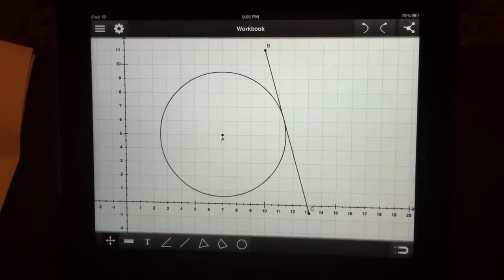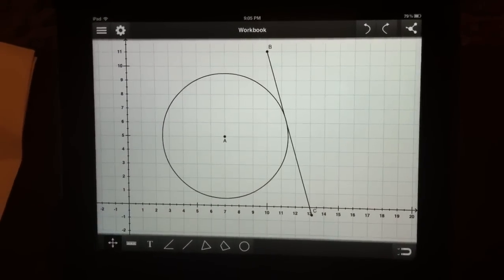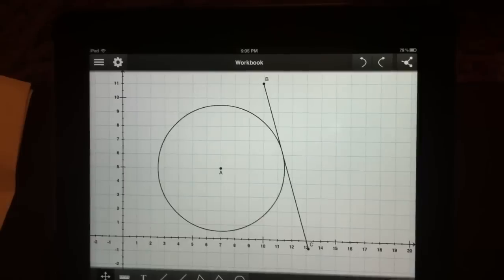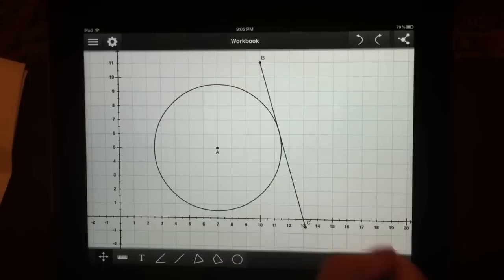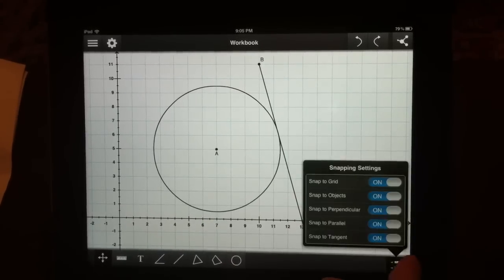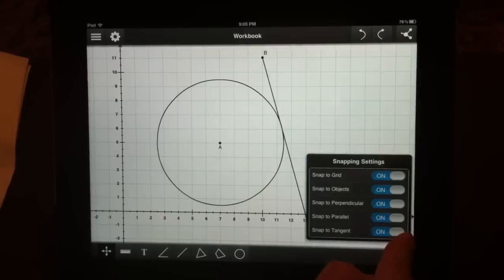You can see that snapping to parallel, tangent, and perpendicular lines happens automatically. Sometimes you don't want that. You control this behavior from the snapping settings. You change the snapping settings in this little window.